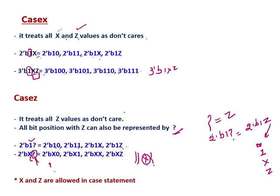This question mark is z here, so it can be x0, x1, xx, or xz. The first bit is fixed and the last bit changes to 0, 1, x, and z. Remember: x and z are allowed in case statements — inside a case statement, x and z are considered.